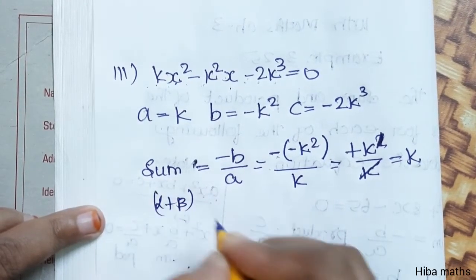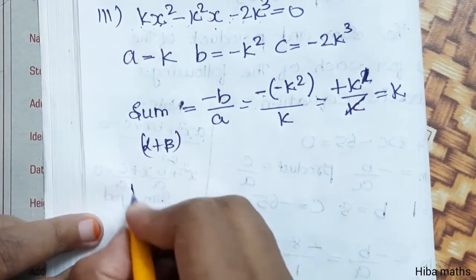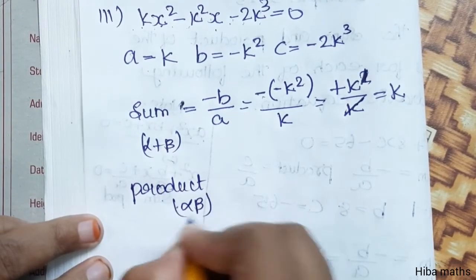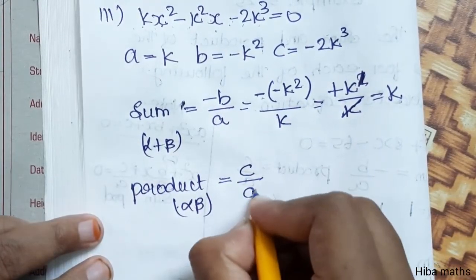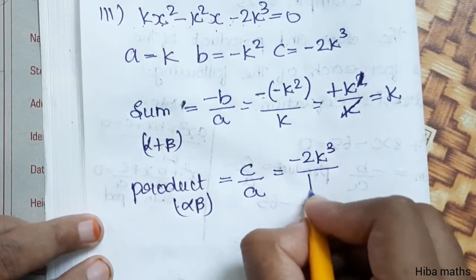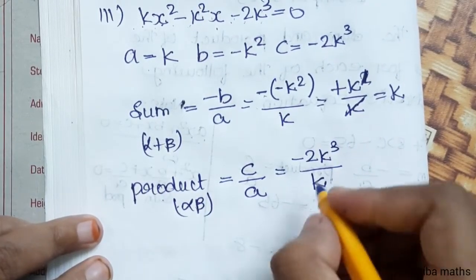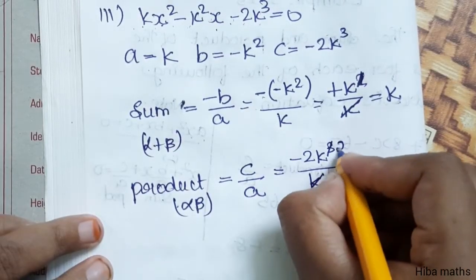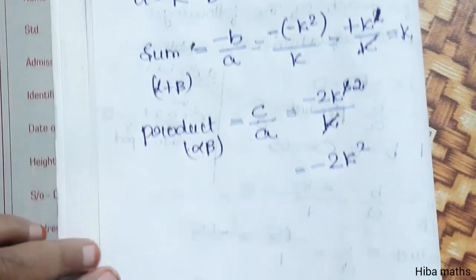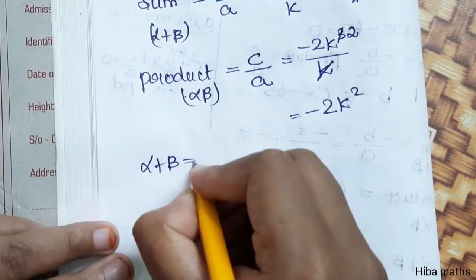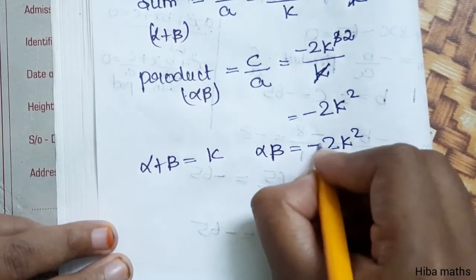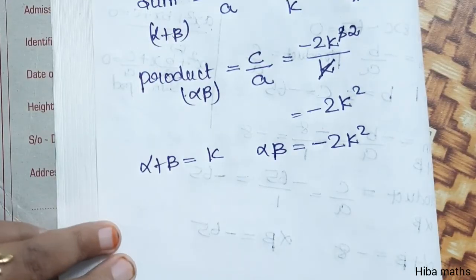Product, alpha into beta, is equal to c by a, that is minus 2 k cube by k. Cancel one k, which gives minus 2 k square. So alpha plus beta value is k, and alpha into beta value is minus 2 k square. Thank you so much for watching.